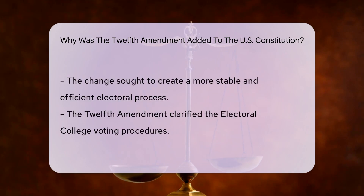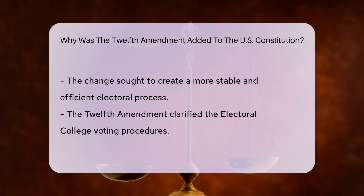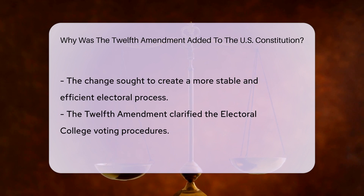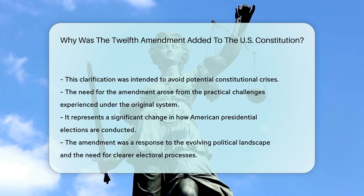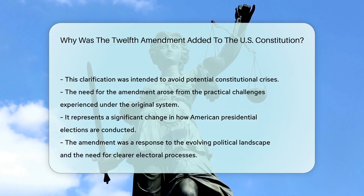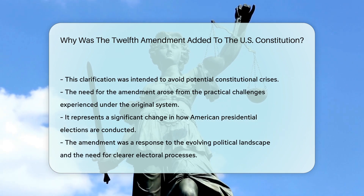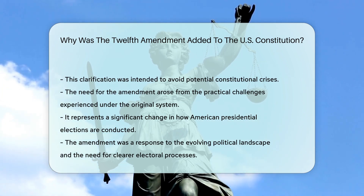This amendment aimed to prevent situations where political opponents were forced to work together. It also aimed to ensure a more stable and efficient election process. By clarifying the Electoral College's voting procedures, the 12th Amendment sought to avoid potential constitutional crises.